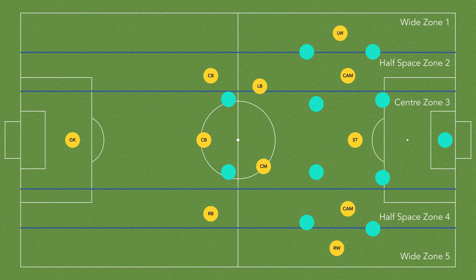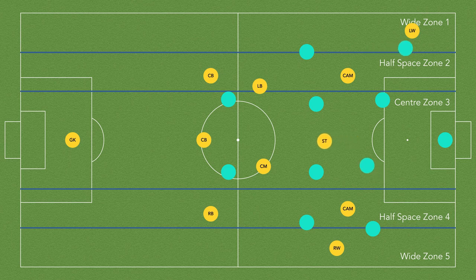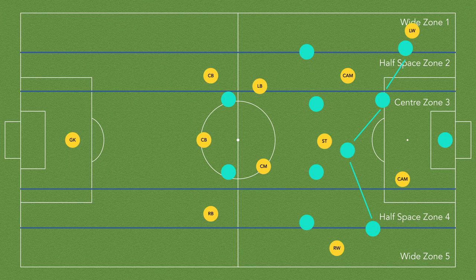All 5 players can ask lots of different questions — some may make movements in behind, some can come short. With this it will be very easy to dismantle an opposition's defensive structure, creating pockets of space that can be exploited. This will be exploited by using quick combinations to play in and around this defensive structure.